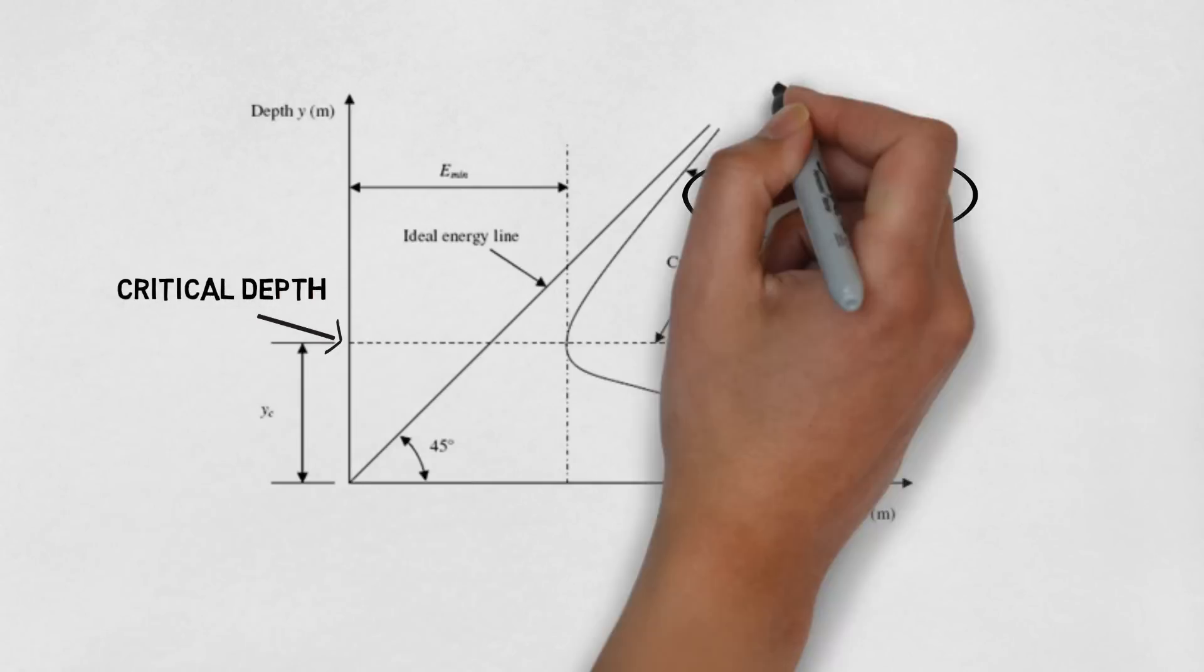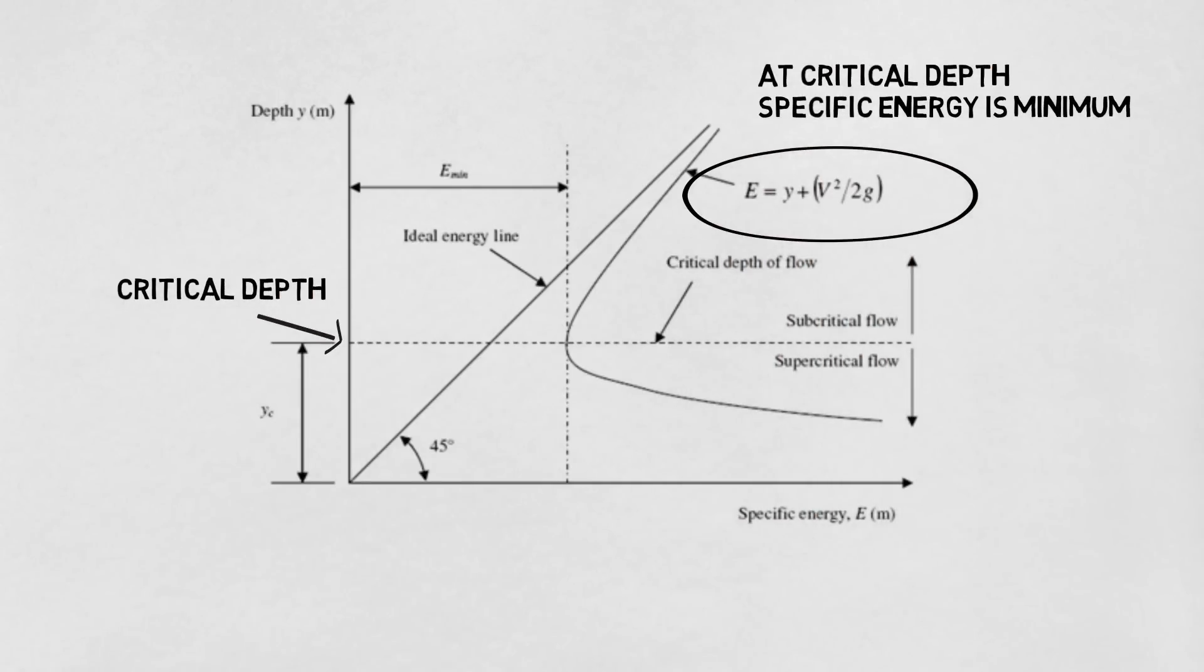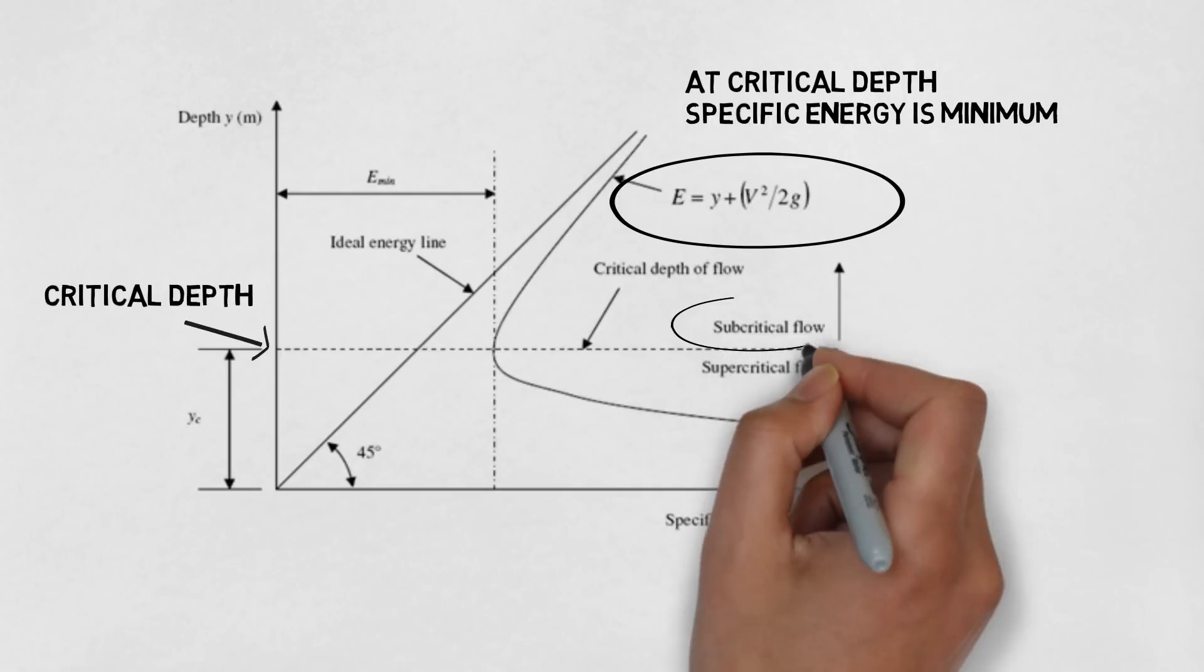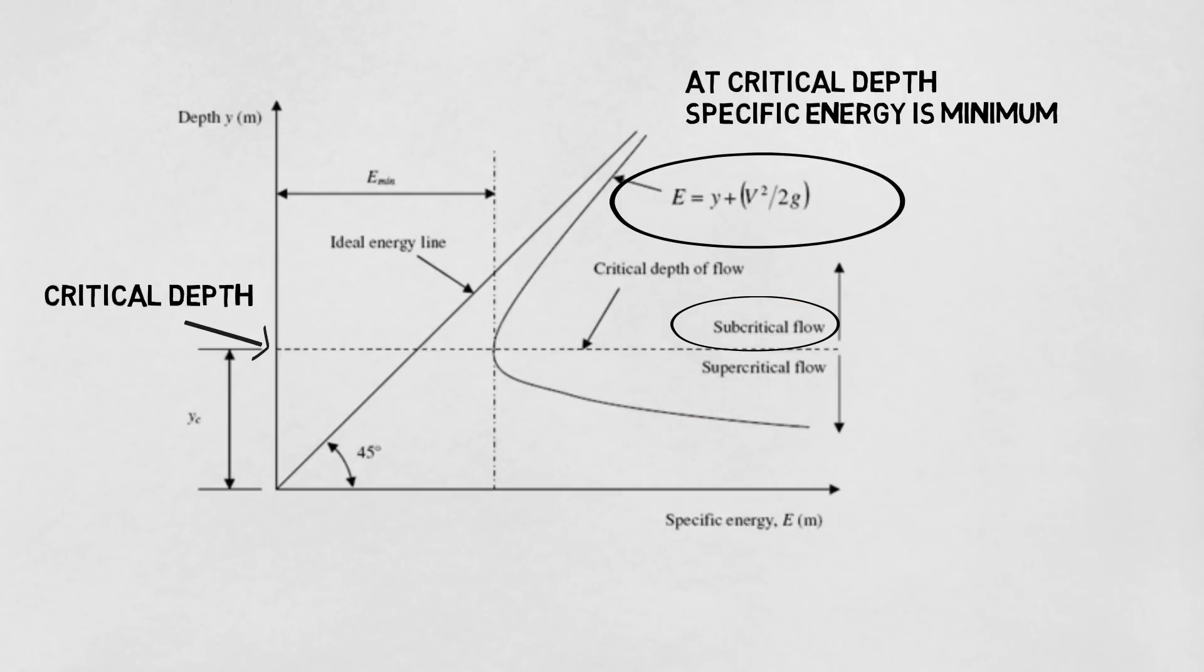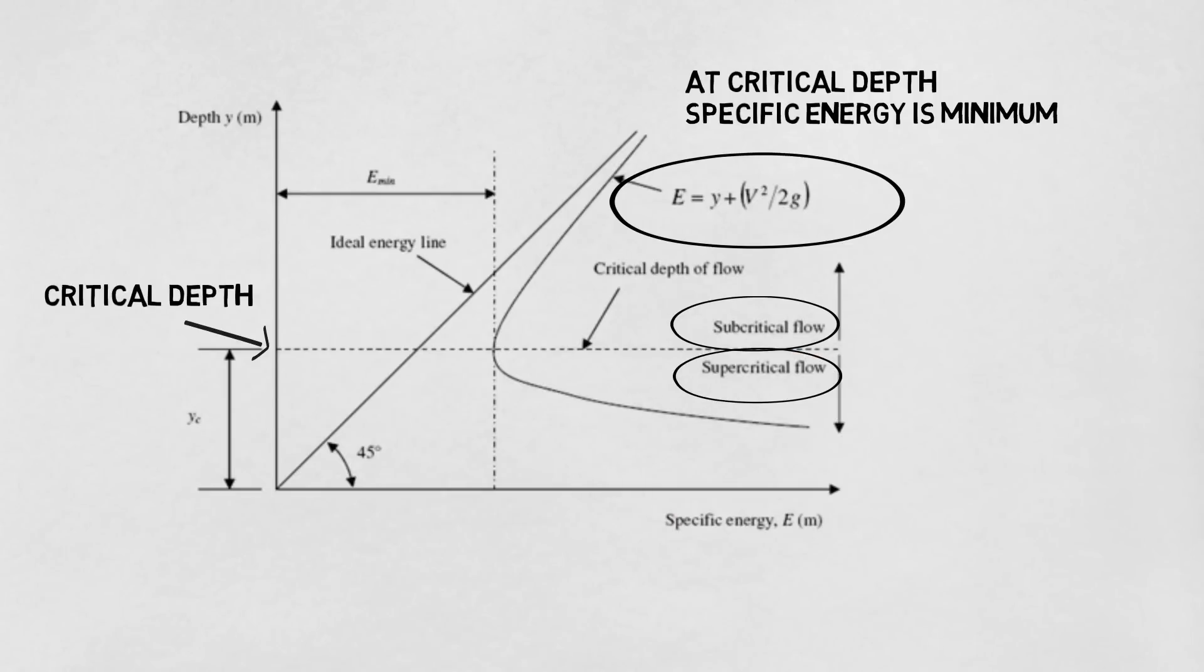The critical depth is the depth of flow where the specific energy is minimum. If the depth of flow is greater than the critical depth of flow, then it is termed as a subcritical flow. And if the depth of flow is less than the critical depth of flow, then it is called a supercritical flow.